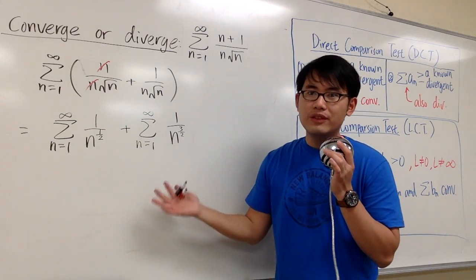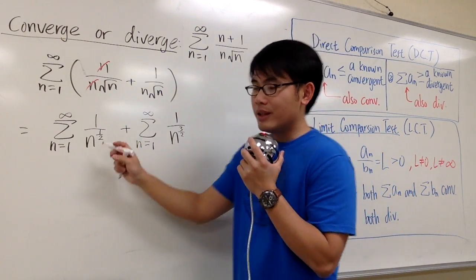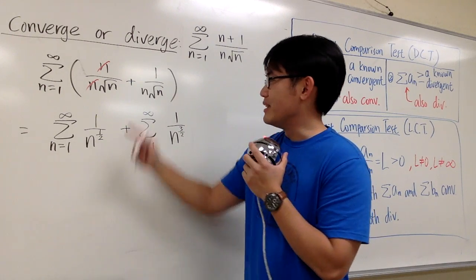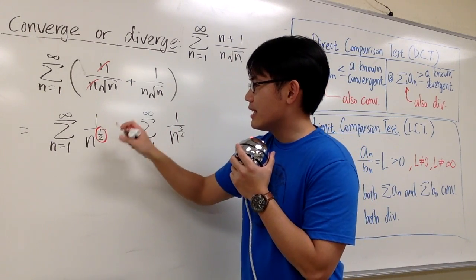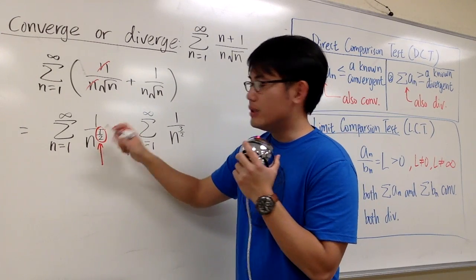So we are just looking at this as two individual series. And for the first one, I think we know much better about this, instead of the original form, because we notice that the p right here is n to the p. The p right here is one-half.